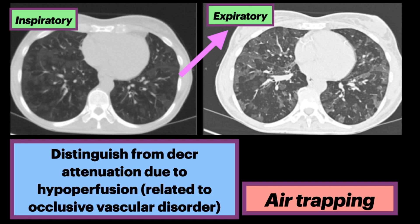Differentiation from areas of decreased attenuation resulting from hypoperfusion as a consequence of an occlusive vascular disorder, such as chronic thromboembolism, may be problematic, but other findings of airways versus vascular disease are usually present.